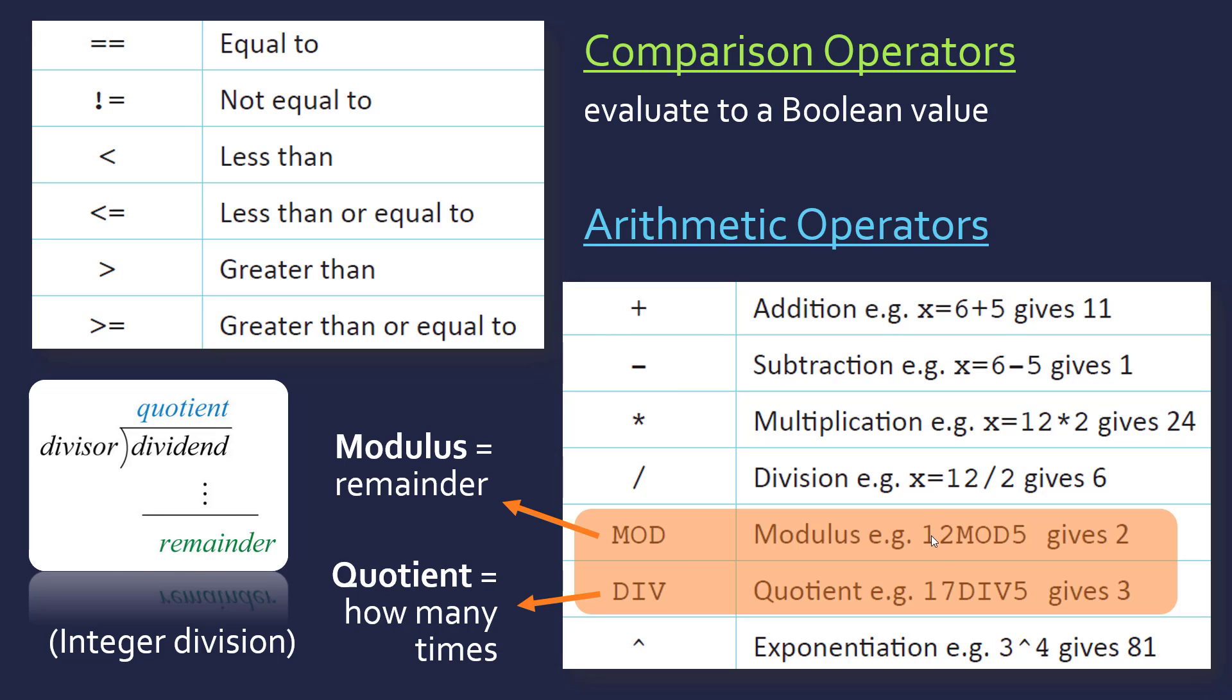So 17 div 5 gives you 3, because 5 goes into 17 3 whole times. It's got a remainder of 2, but this isn't returned, because we're just focusing on the integer part of it. Often quotient is represented with a backslash, as opposed to a forward slash, like a normal division. And so it's how many times the divisor goes into the dividend.